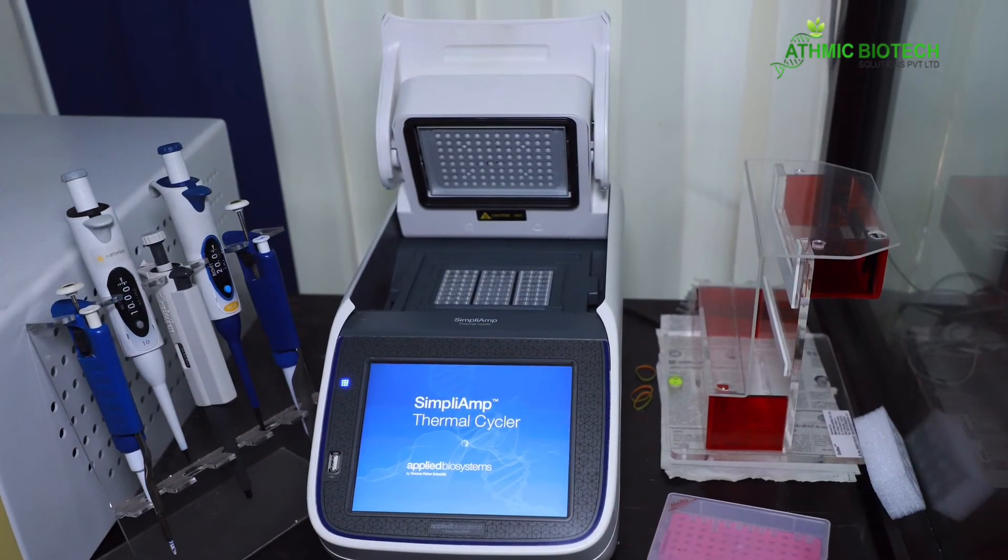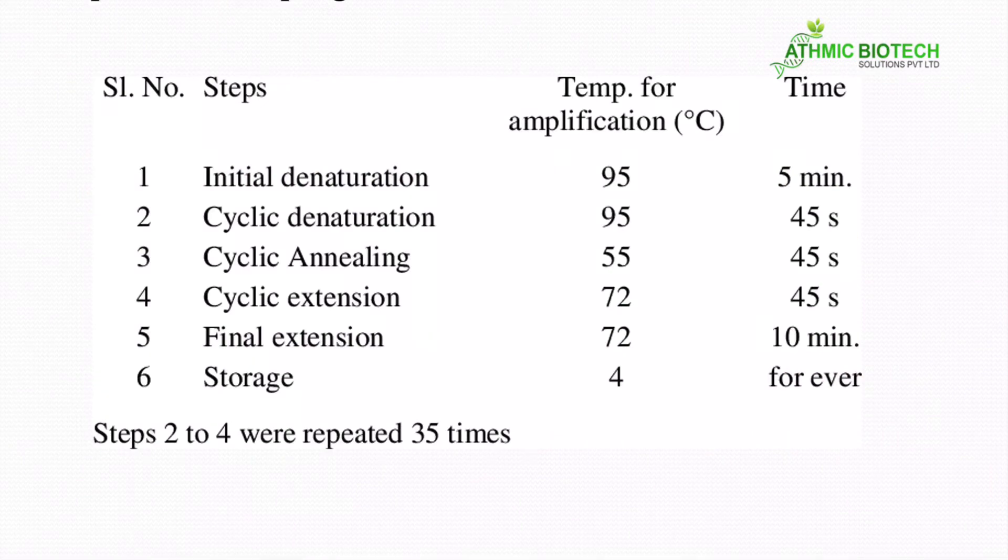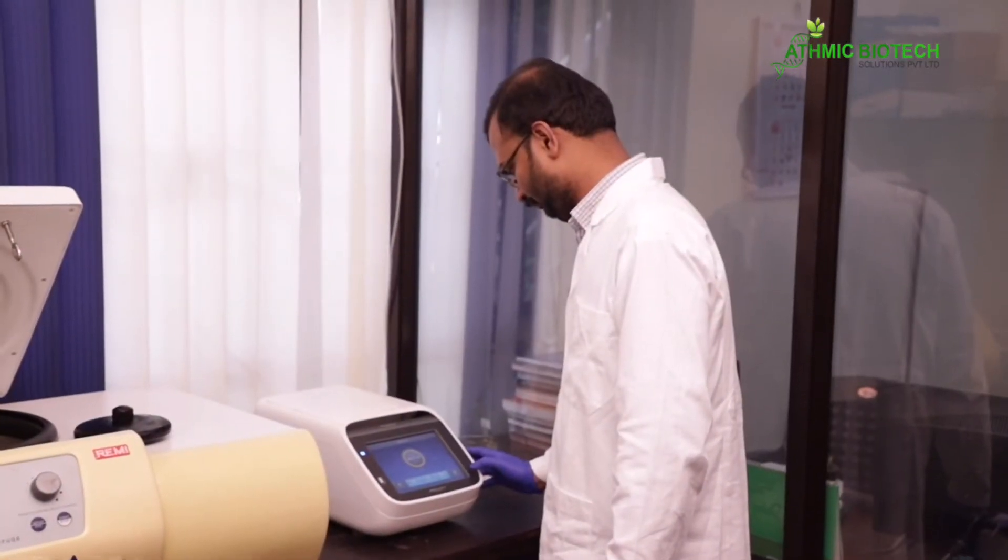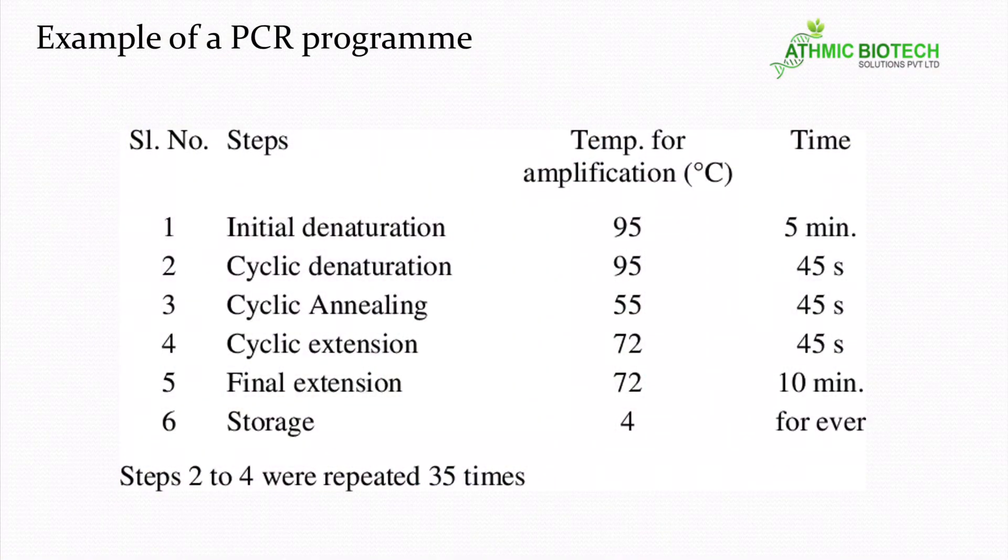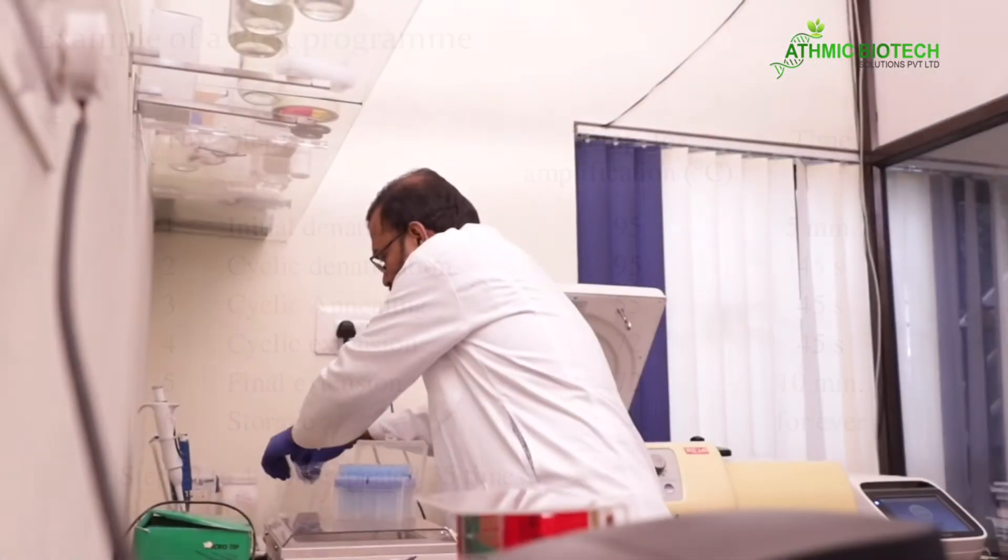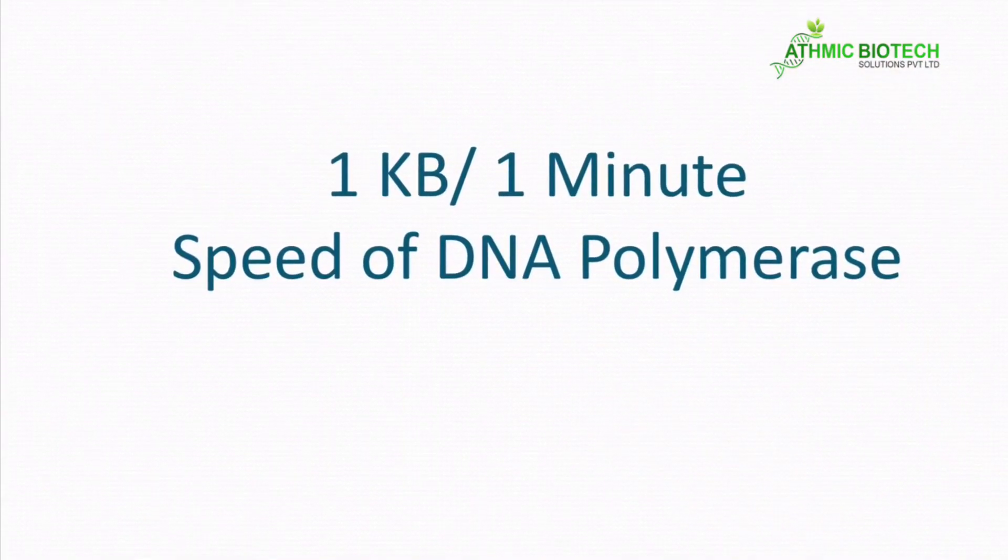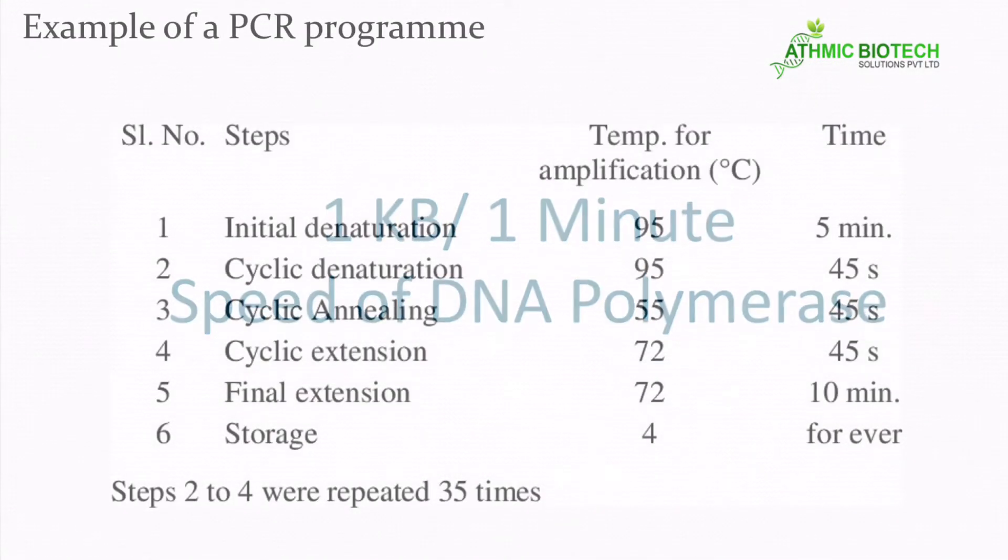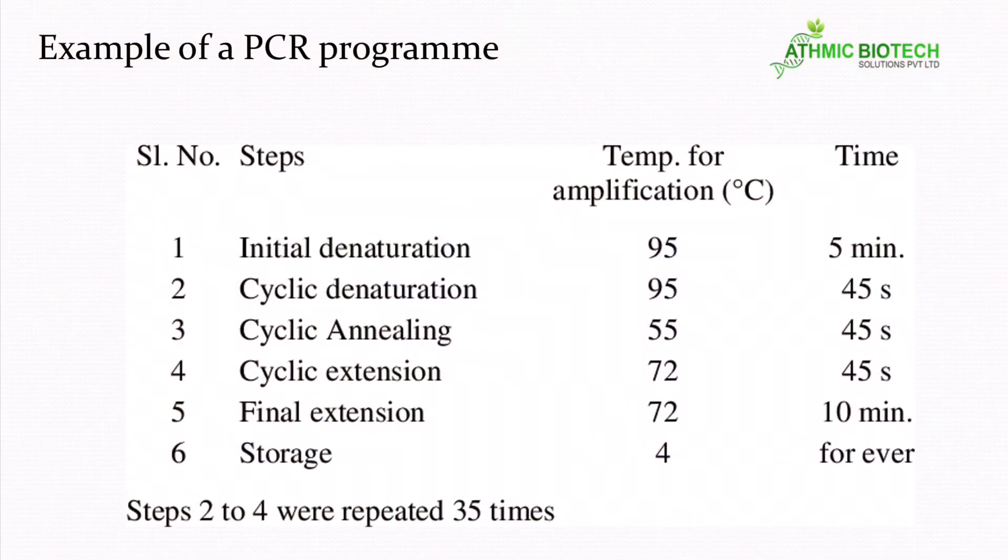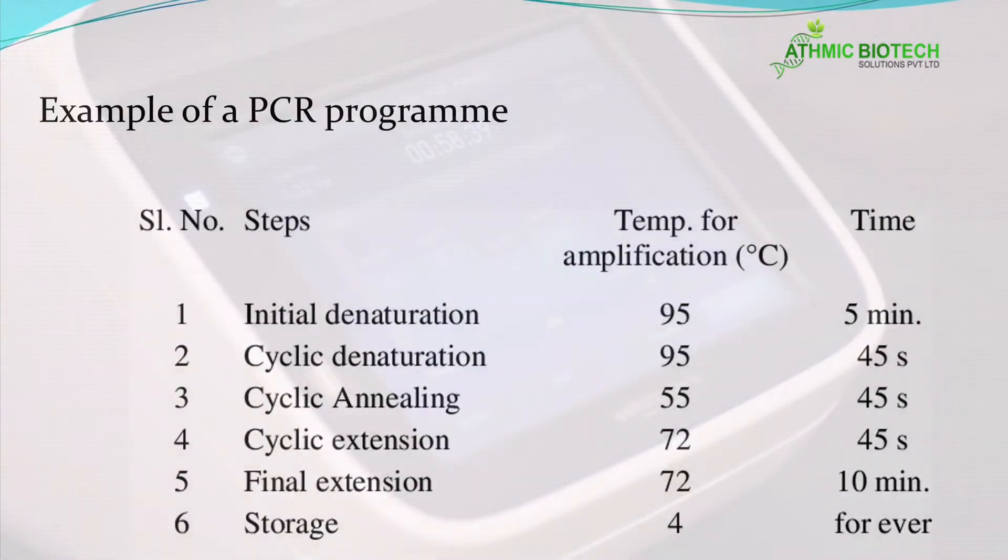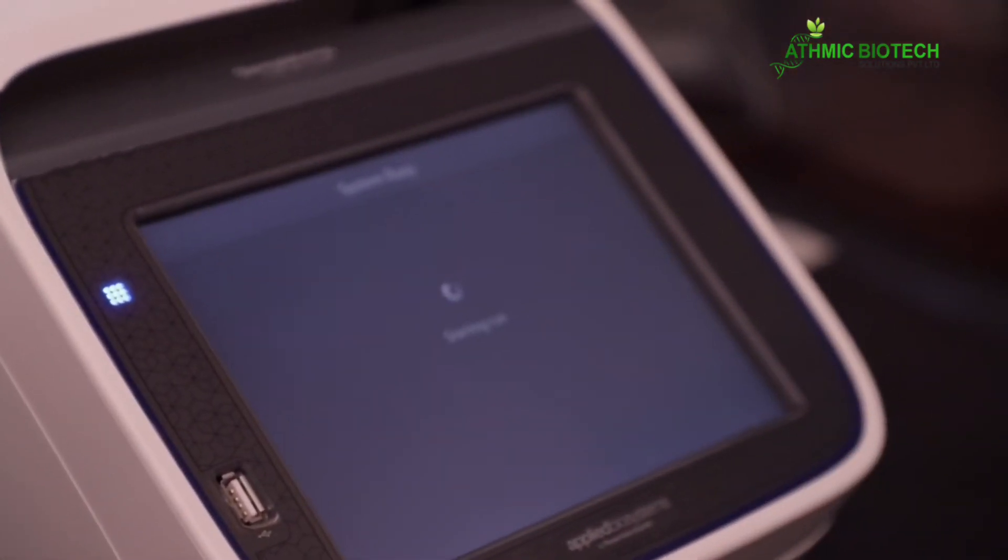The only difference will come at the primer annealing step. That 55 degrees Celsius will change based on your primer. Suppose your forward and reverse primer has an average annealing temperature of 58, you have to change that 55 to 58. And also the extension step - based on the amplicon size. I have already told 1 kb, 1 minute is the speed of DNA polymerase. So here it is only 45 seconds. That means the average amplicon size of this PCR reaction will be around 750 bases. Suppose you are going to amplify a 1 kb gene product, you can change that 45 seconds to 1 minute.